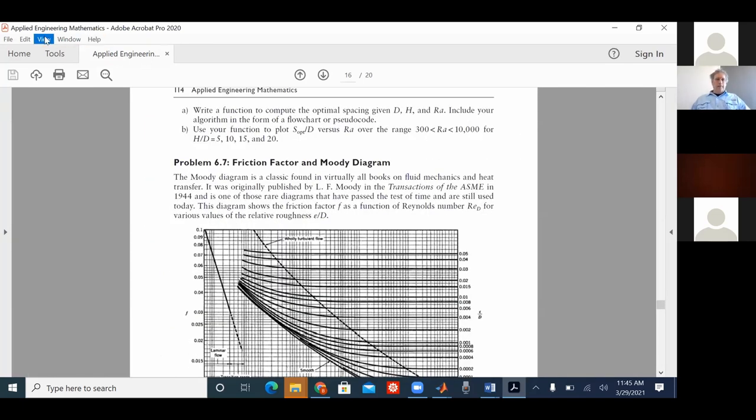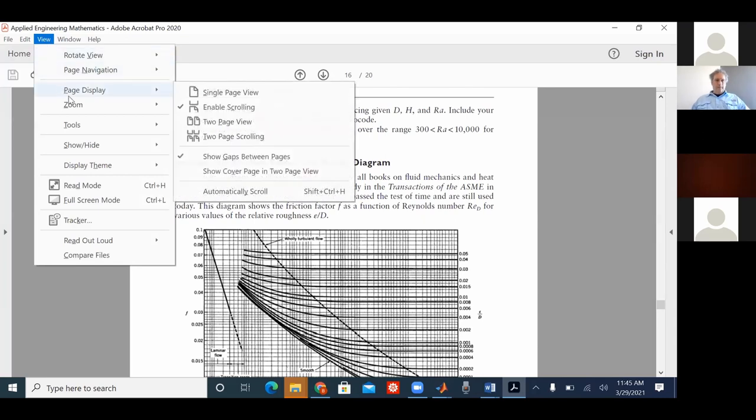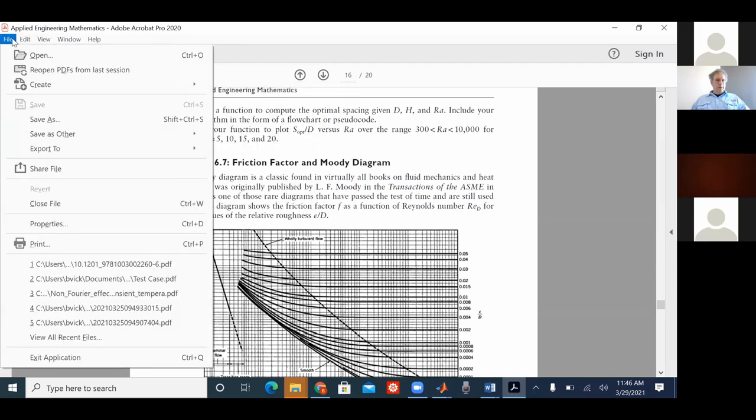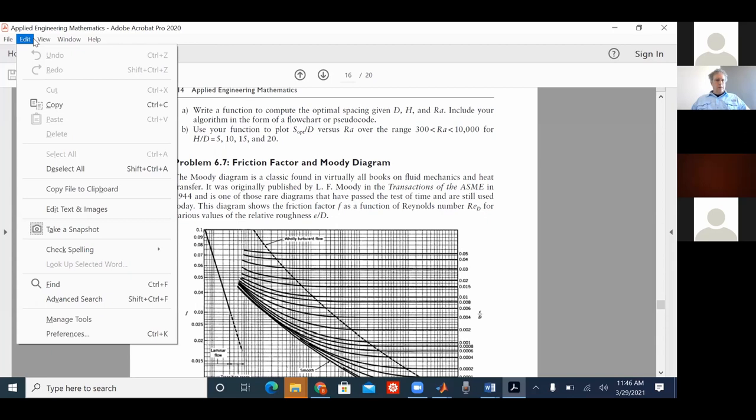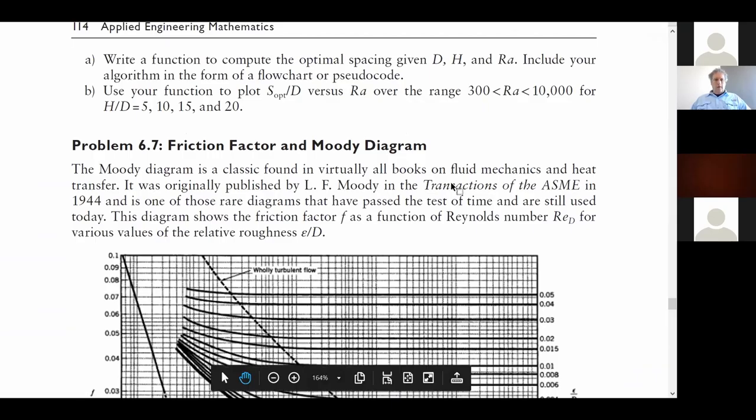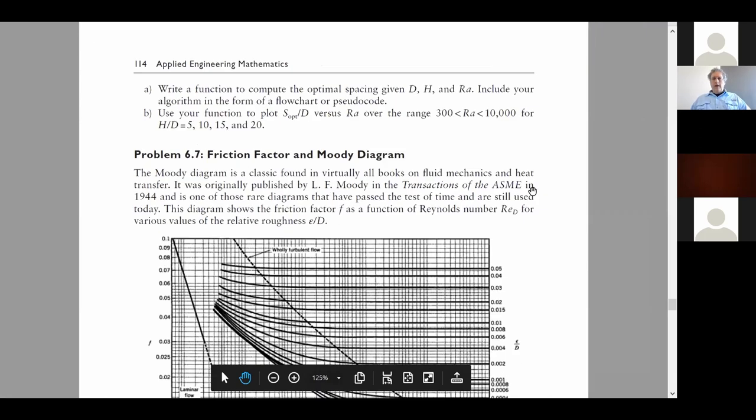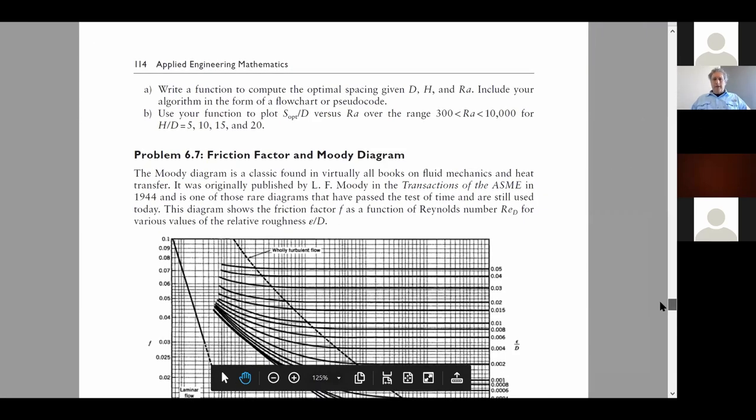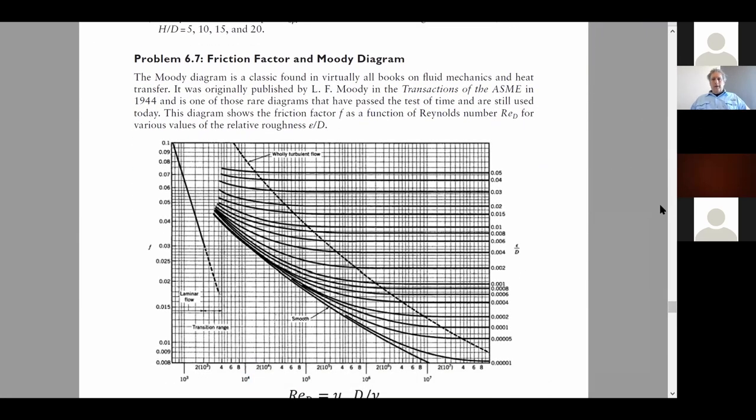We now go to the Friction Factor. Here's problem 6.7 from your textbook. The Moody Diagram. It's a classic.